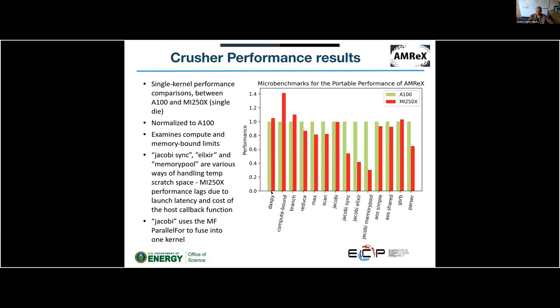The benchmark covers: DAXPY (memory bound), compute-bound operations, a branch-divergent kernel, parallel reduce and reduce-max operations, and a parallel prefix scan. For the Jacobi variants — Jacobi sync, Jacobi async (via elixir), and Jacobi memory pool — these test different methods for handling temporary scratch space. The MI250X performance lags on these due mostly to kernel launch latency.